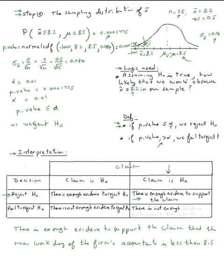We never say the claim is true or false. We say we have enough evidence to support, or we don't have enough evidence to support. If we had failed to reject h0, we would say there is not enough evidence to support the claim. There are only two cases: either there is evidence to support the claim, or there is not enough evidence.